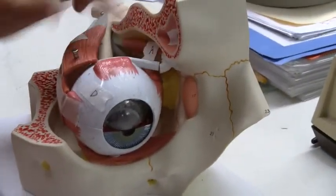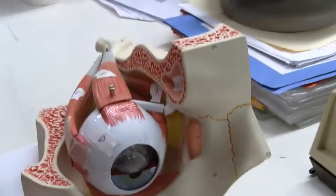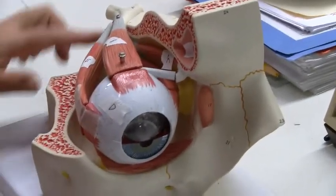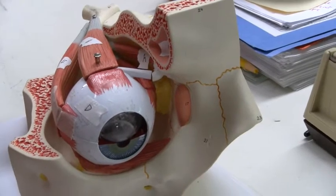The trochlear controls the superior oblique, and which one controls the lateral? Abducens, like an abduction. It makes your eye abduct.